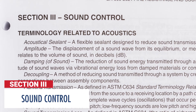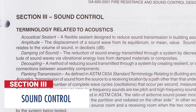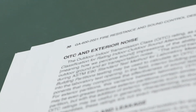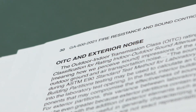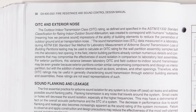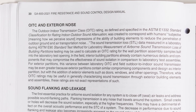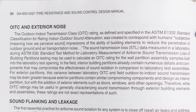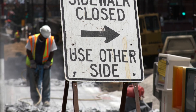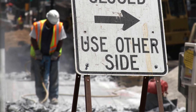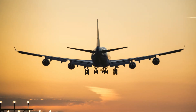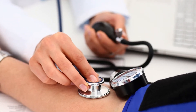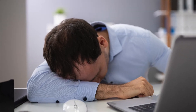Section 3 covers sound control. Terminology related to acoustics is defined on page 29, along with a brief overview of sound. New to GA600 2021 are outdoor-indoor transmission class (OITC) ratings for certain generic systems. Considered essential by the window and door industry, OITC ratings are based on laboratory testing that measures sound transmission loss of a constructed assembly. OITC tests focus on lower frequency noise such as construction noises, car horns, stereos, and the sound of airplanes.